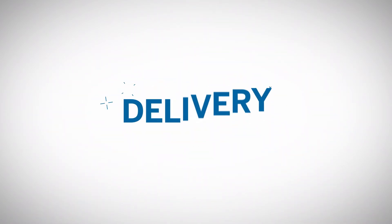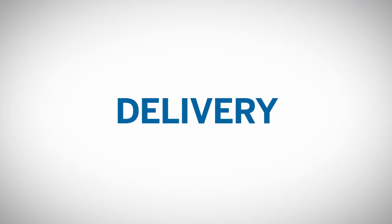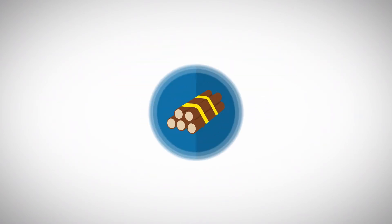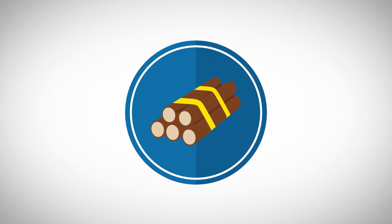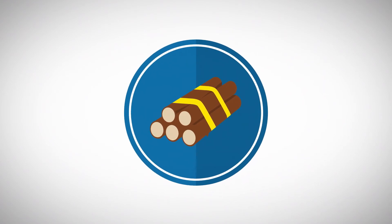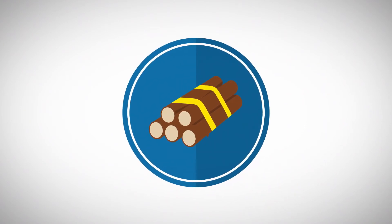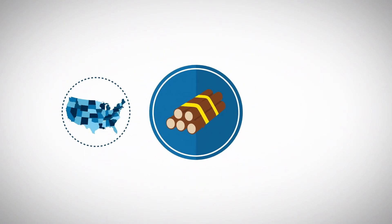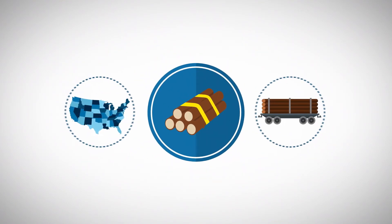A futures contract also specifies where the asset will be delivered upon execution. Delivery is an important consideration for certain physical commodity markets entailing significant transportation costs. For example, CME Group's Random Length Lumber contract specifies that delivery must occur in a specific state and in a certain type of boxcar.